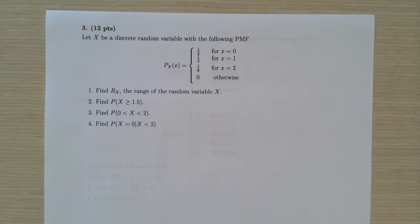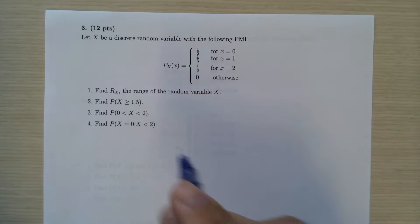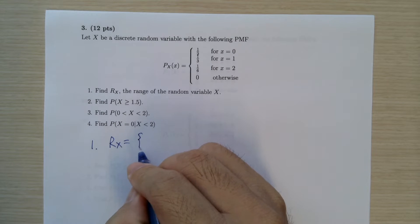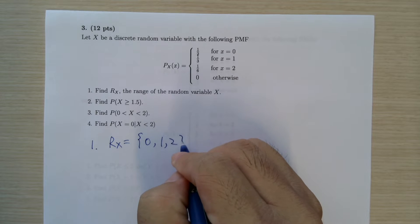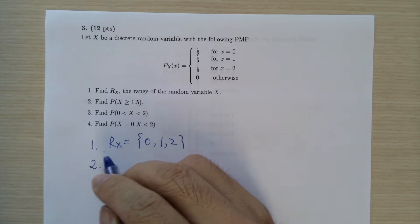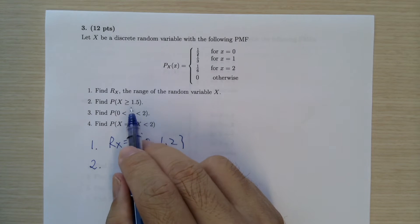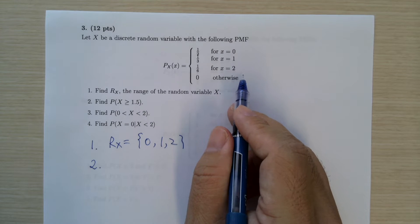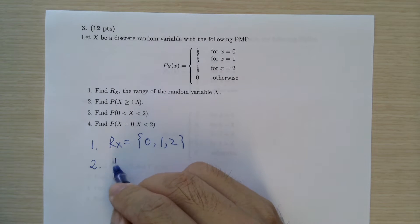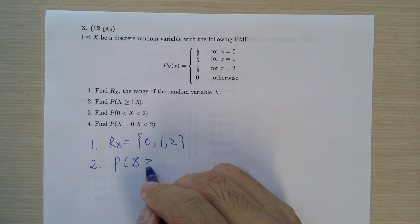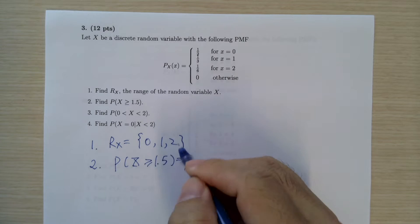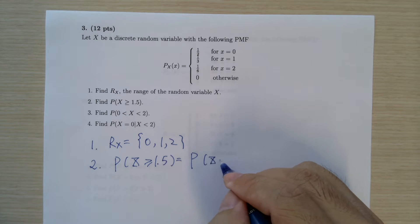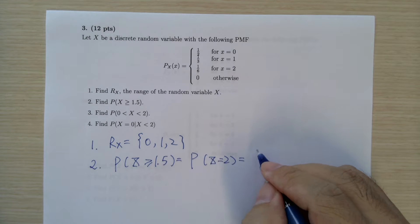So this one should be pretty simple. For the first one, the range is going to be 0, 1, and 2. For part 2, this is P(x ≥ 1.5). So it only applies when x equals 2, which gives 1 over 6.